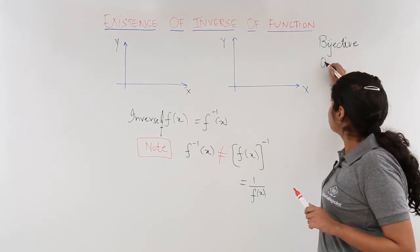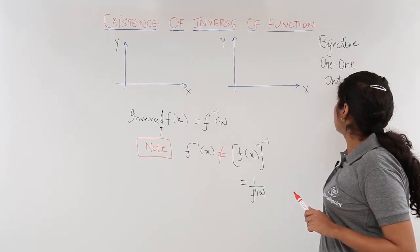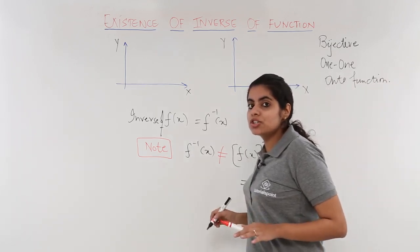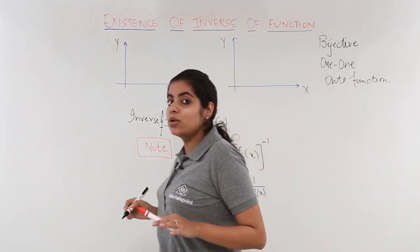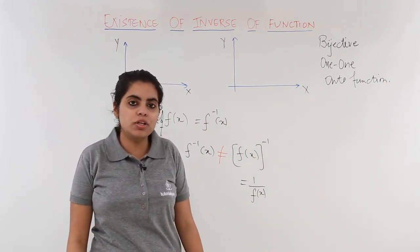Now, what is a bijective function? A bijective function is a one-one onto function. So inverse of a function exists only and only if I have a bijective function. That means one-one onto function.